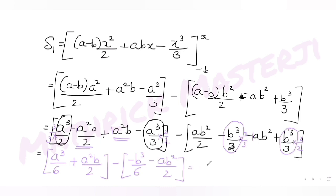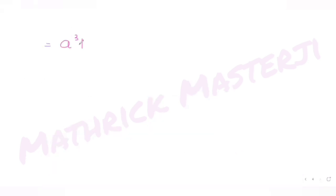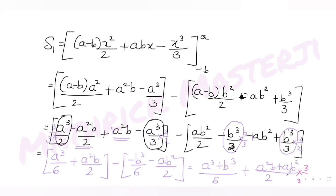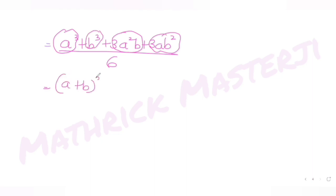After simplification, S1 = (a³ + b³)/6 + (a²b + ab²)/2. Making the denominator 6 throughout: S1 = [a³ + 3a²b + 3ab² + b³] / 6, which is exactly (a + b)³ / 6. So S1 = (a + b)³ / 6.